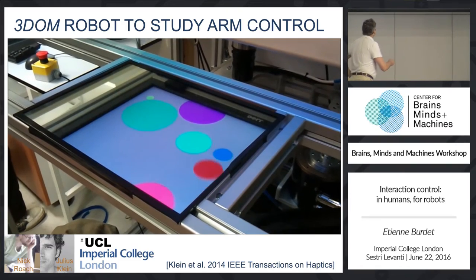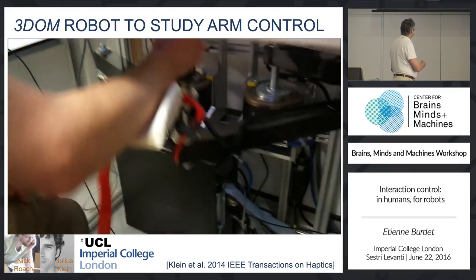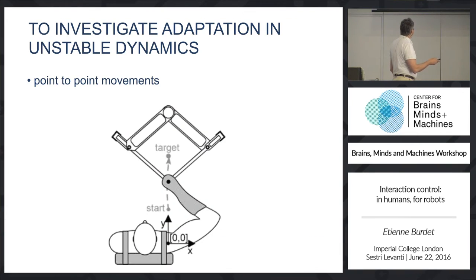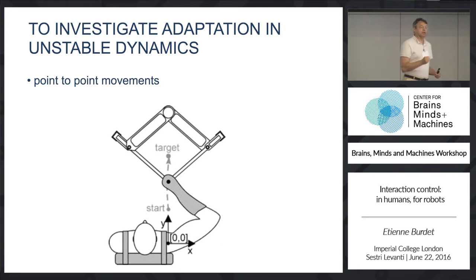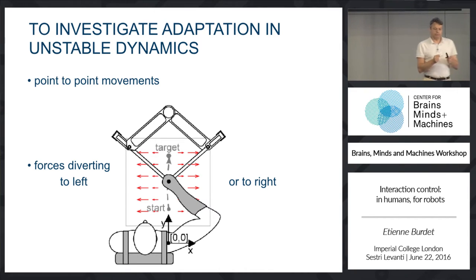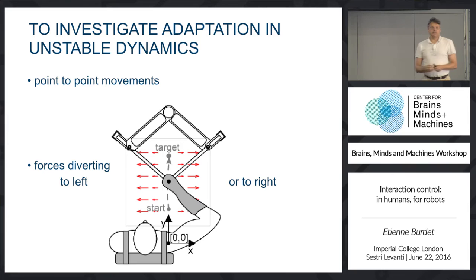This is a robotic interface we built and use at UCL for patients and for neuroscience. The experiment is a basic reaching movement, like taking a cap. We put a force field that acts like gliding: if you deviate a bit to the right, you slide further right; if to the left, you slide further left. That's something really annoying — you try to reach the target and you cannot.